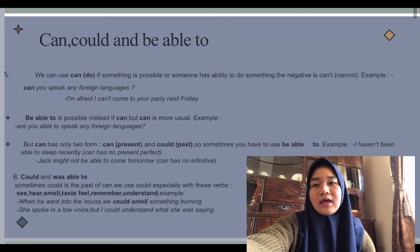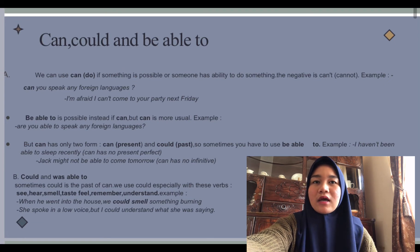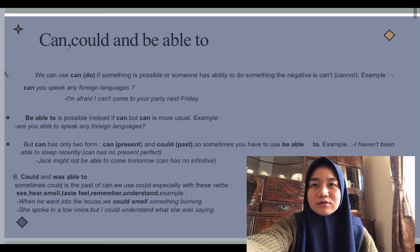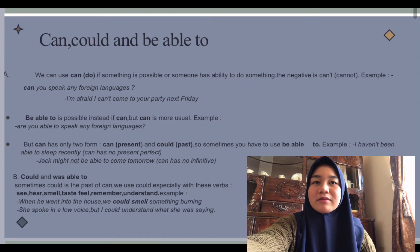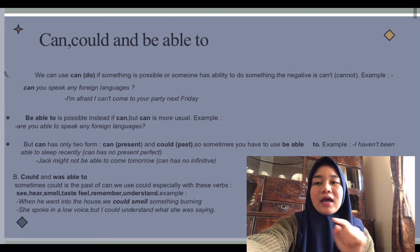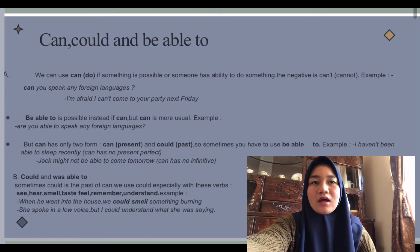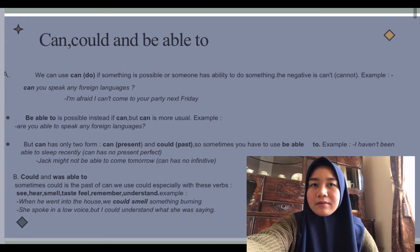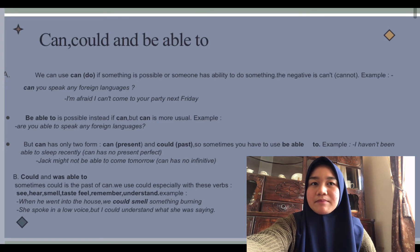'Can' has only two forms: 'can' for present and 'could' for past. So sometimes you have to use 'be able to.' For example: 'I haven't been able to sleep recently' — here 'can' has no present perfect form. And 'Jack might not be able to come tomorrow' — here 'can' has no infinitive form.